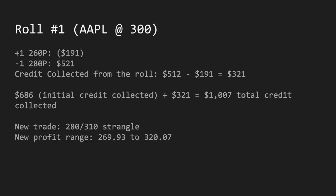The first roll I made was when Apple was at $300. This was my first defensive move — I closed the 260 put and sold the 280 put, collecting another $321 in credit. So total credit became $1,007 (686 plus 321). The new trade is the 280 put and 310 call. To calculate the new profit range, we take the total credit of $10.07 and subtract that on the put side and add it on the call side.